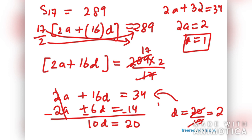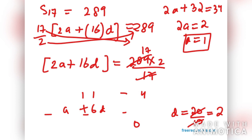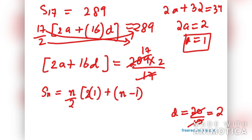SN equals N over 2, 2A where A is 1, plus N minus 1 D, where D is 2. So N by 2, then 2, 2N minus 2. 2 would be cancelled out with 2.